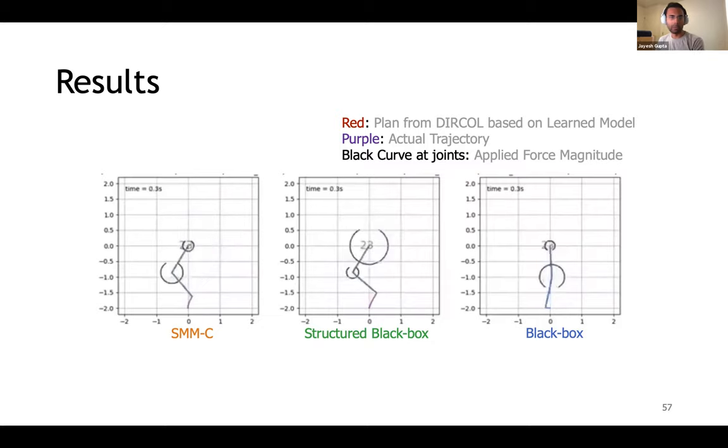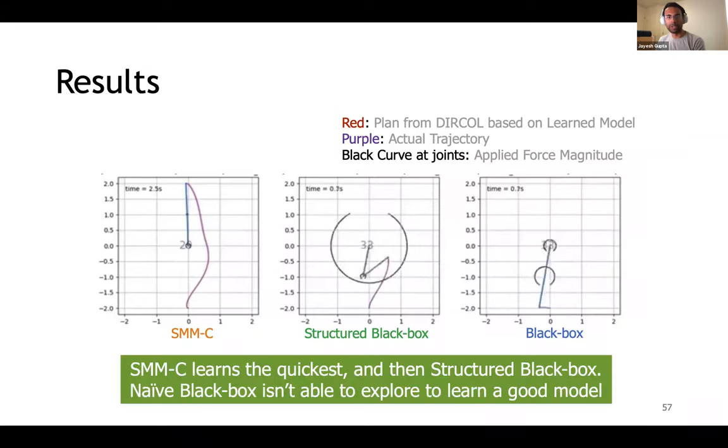As you can see, the model with the most domain knowledge, SMMC, learns the quickest within about 10 to 15 interactions with the environment. The structured black box model follows it and is able to learn a good enough model after about 20 or 30 interactions. Naive black box network, on the other hand, is not even able to explore well enough to learn a useful model even after 60 interactions. The key takeaway should be that the structured black box, which is technically equally expressive as a naive black box network, is vastly better for reinforcement learning with mechanical systems.